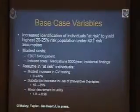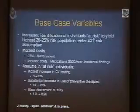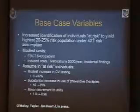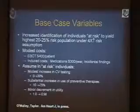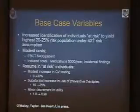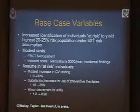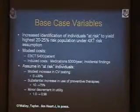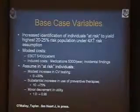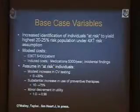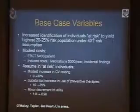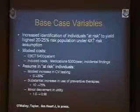That number is based very highly on assumptions and variables that you input. In a model in press, we made a variety of assumptions. First, there would be increased identification using EBCT of individuals at risk — a shift to approximately a four-fold increase in identification of at-risk individuals using calcium scanning — and that it would occur at modest costs around $400 per patient. We took costs from the perspective of the payer, not society. Then we looked at induced costs, assuming as a base case that medicines would cost on average $300 a year and there would be some incidental findings that would engender costs. We proposed there would be some modest increase in subsequent cardiovascular testing — such as stress testing — in about a third of those individuals.